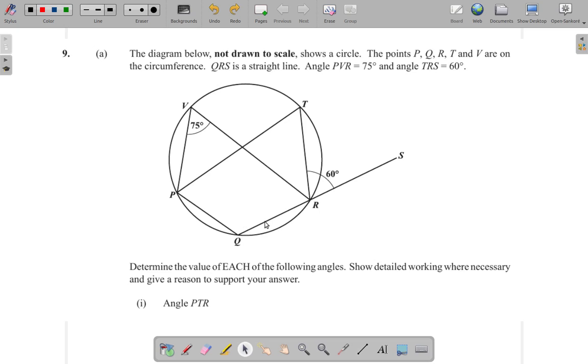QRS is a straight line. Angle PVR is 75 degrees, as you can see here. And angle TRS is 60 degrees. You can see that here.